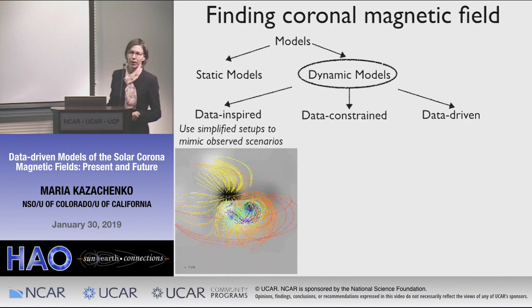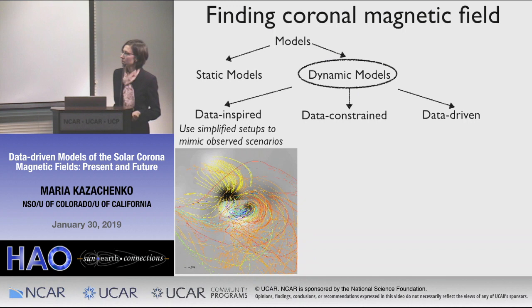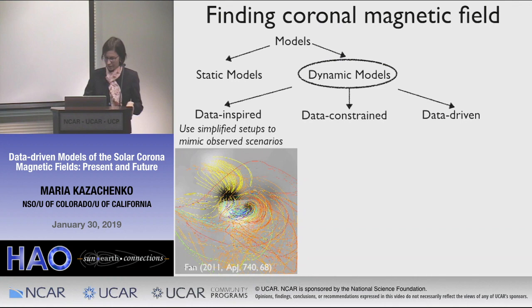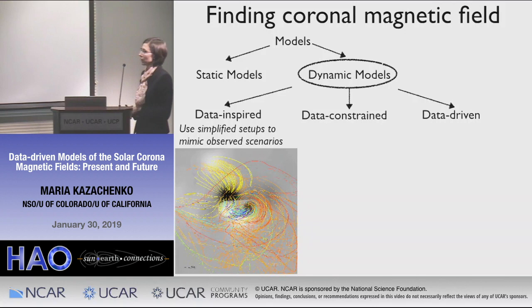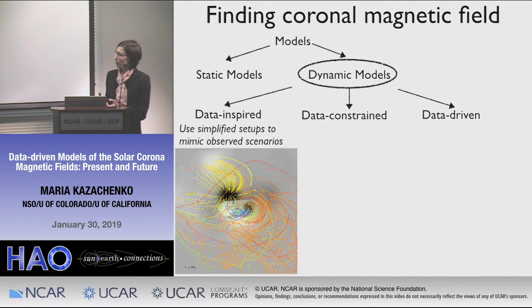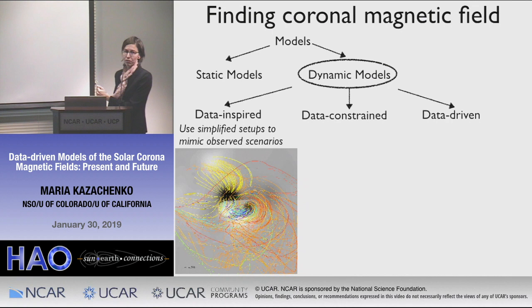Data-inspired models use simplified setups to mimic observed scenarios — they are inspired by whatever is in the observations. Here is a nice movie where we have a small bipole inserted into pre-existing fields, which then interacts with an overlying field and produces an eruption, something we frequently observe on the sun. We don't try to reproduce the actual magnetic field as a function of time, but these models are extremely good for understanding the scenarios that are frequently observed on the sun.